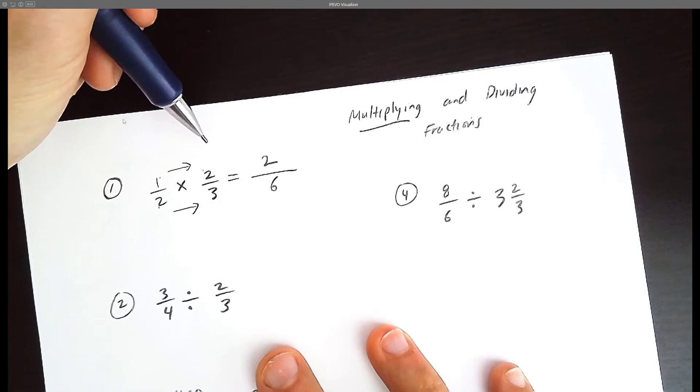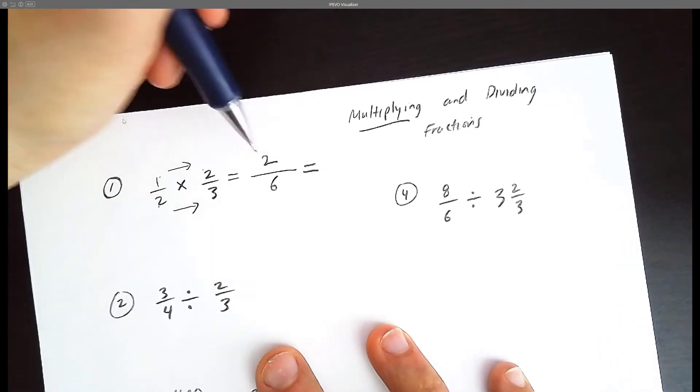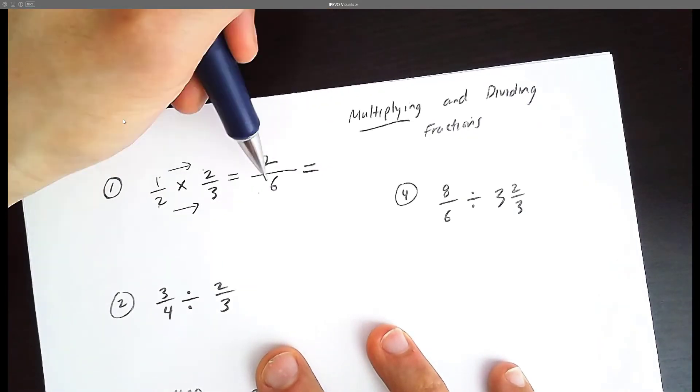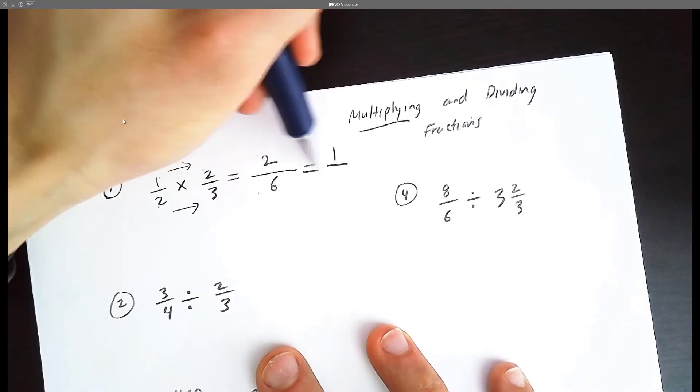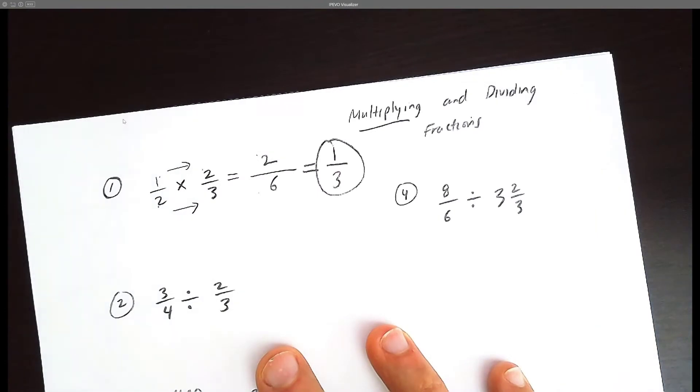And there's our answer. But don't forget to simplify. 2 divided by 6, you can divide top and bottom by 2 and halve it. So half of 2 is 1, half of 6 is 3. So there's our final answer.